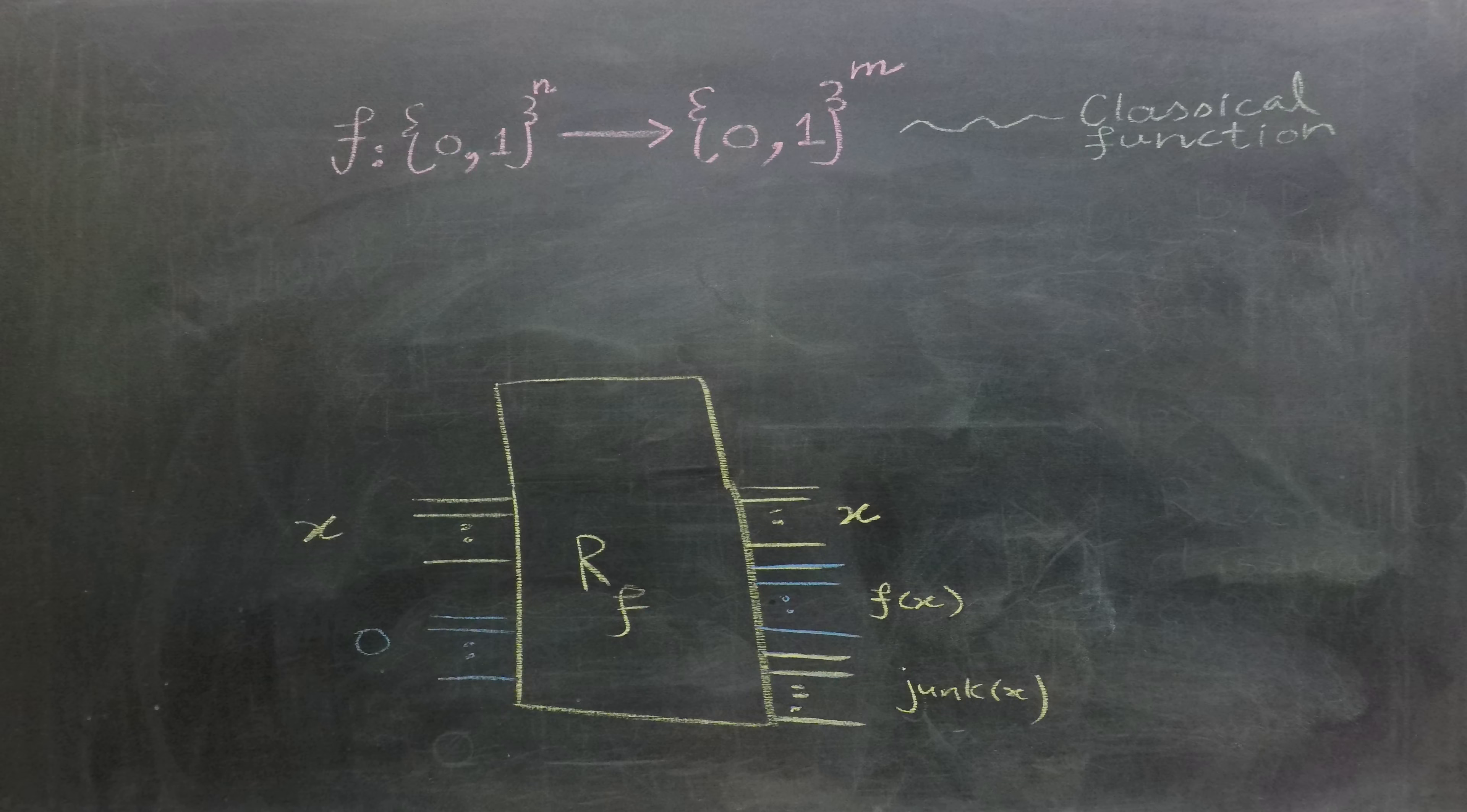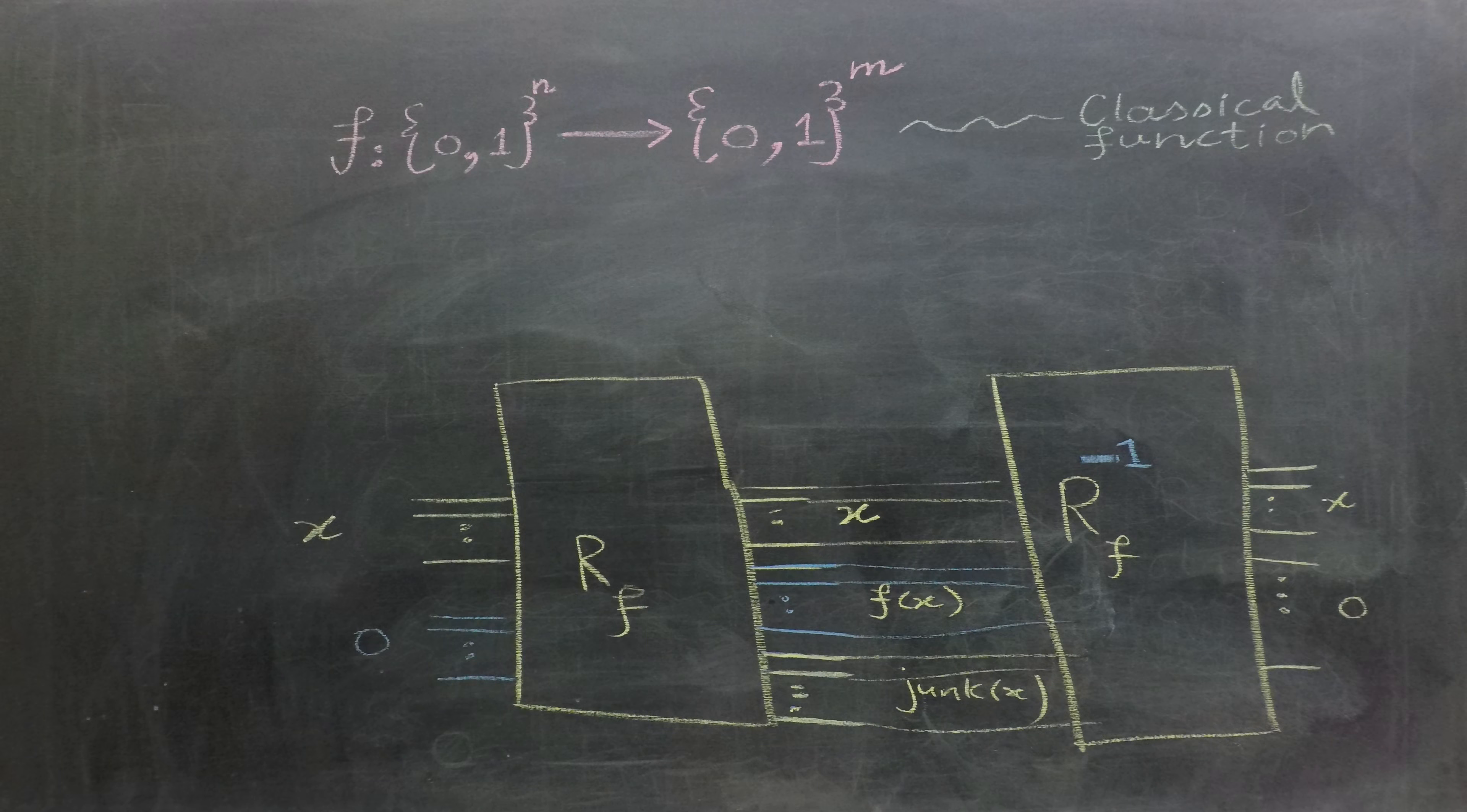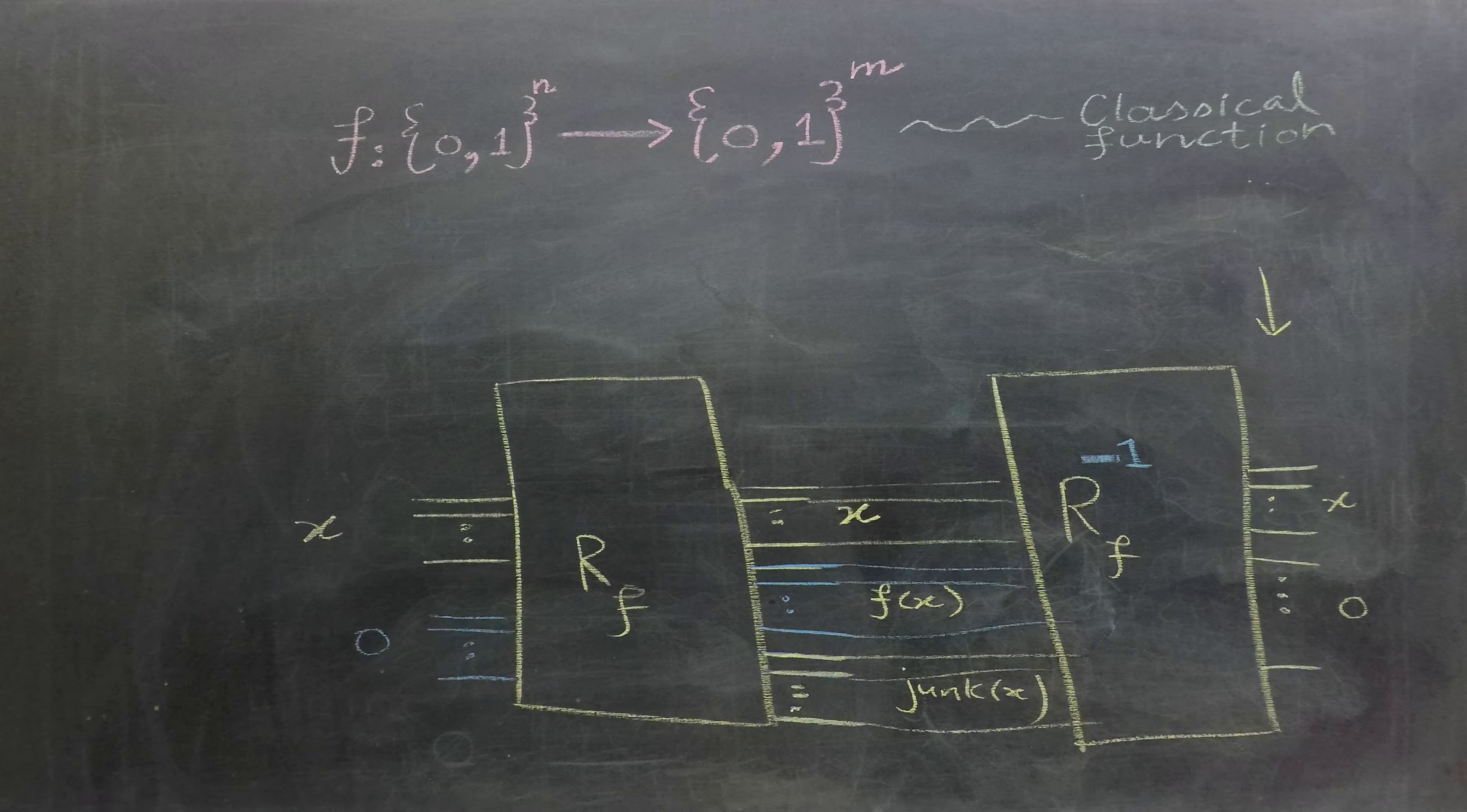In our redesign process, to eliminate the junk, we feed the output of our classical circuit RF into its inverse, thus converting the output back to the original input. We have successfully got rid of the junk. However, this process has also eliminated f of x.